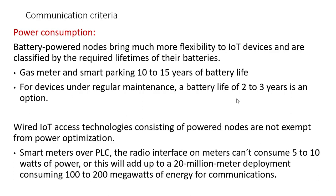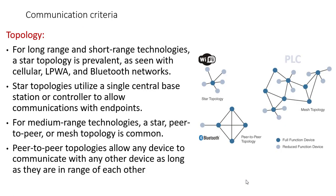Even wired IoT access technologies are not exempt from power optimization. For example, smart meters over PLC can consume 5–10 watts of power. If we have 20 million meters deployed consuming 5–10 watts each for communication only, that amounts to 100–200 megawatts of energy — a very costly concern. So power consumption is a major parameter.